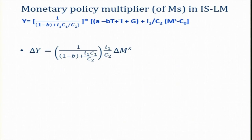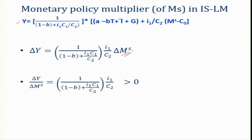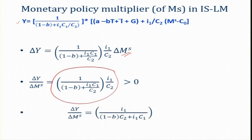Now let us talk about the monetary policy multiplier. Using the IS-LM combined equation, let us see del-Y due to a change in money supply. When you take the first derivative you get this value — this is the monetary policy multiplier. So the monetary policy multiplier, in its simplified version, is this expression.